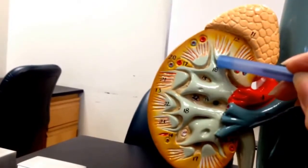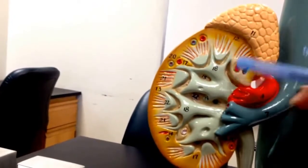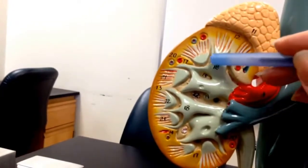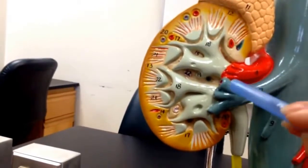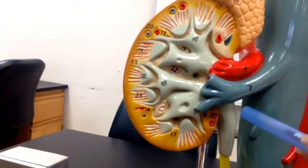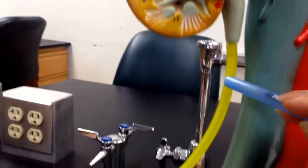The tip would be the renal papillae feeding into the minor calyx, the major calyx. The renal pelvis is under here leading down into the ureter.